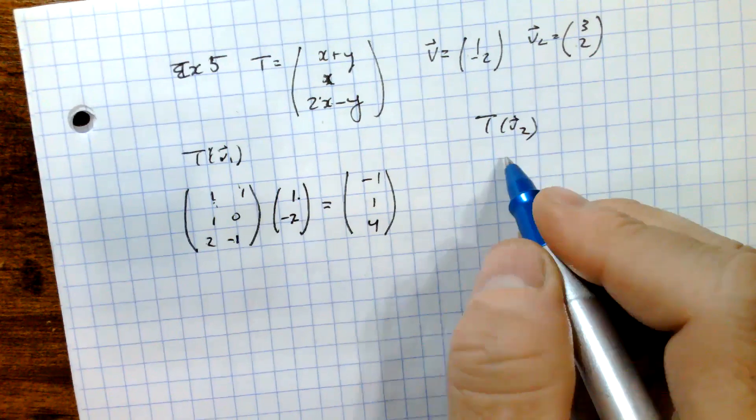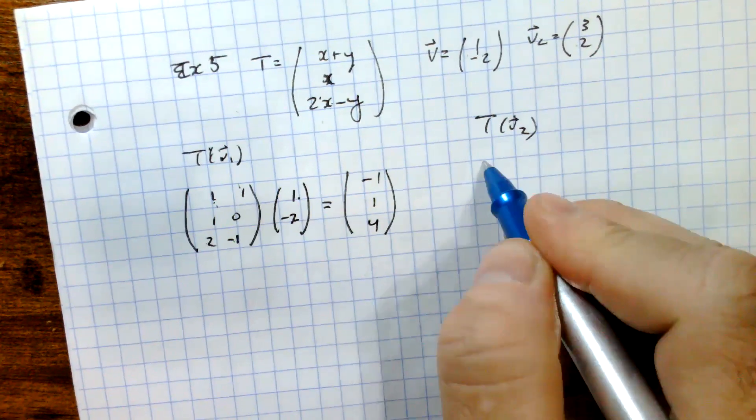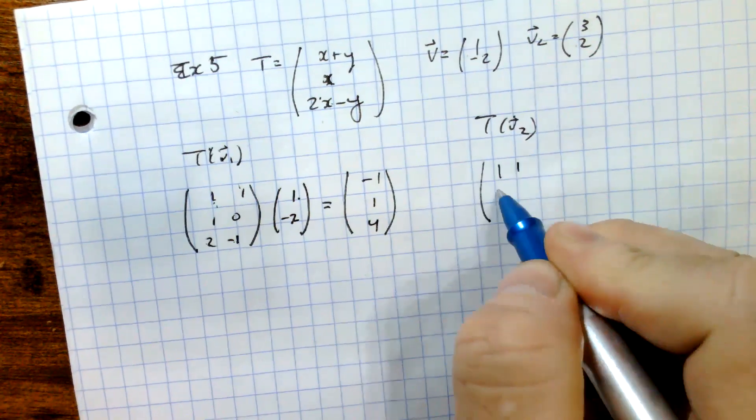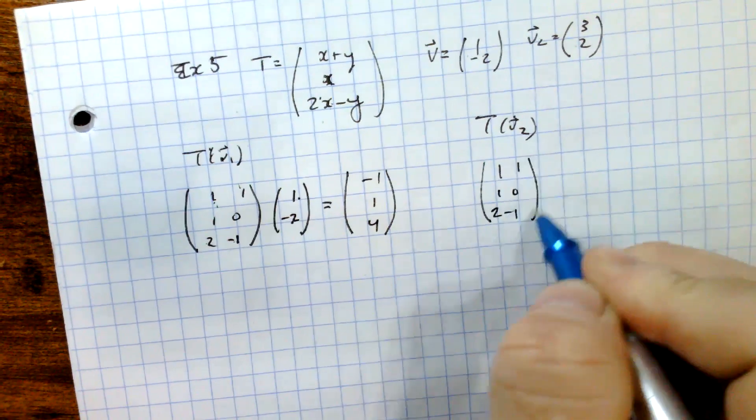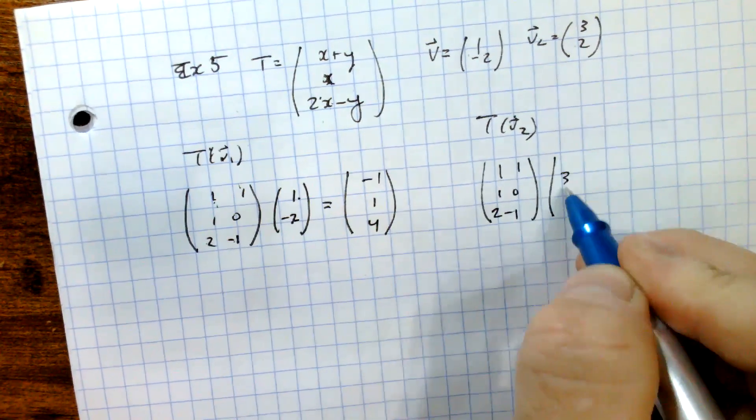Okay, let's do the same for V2 here. And so we're going to look at 1, 1, 1, 0, 2, and negative 1 on 3, 2.